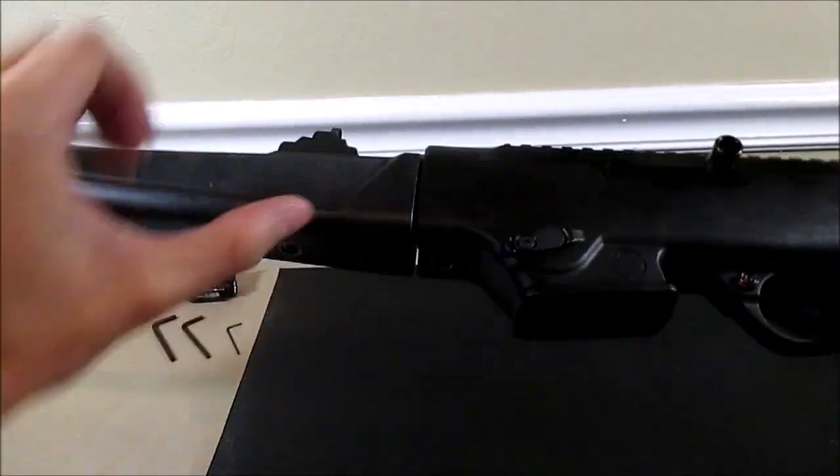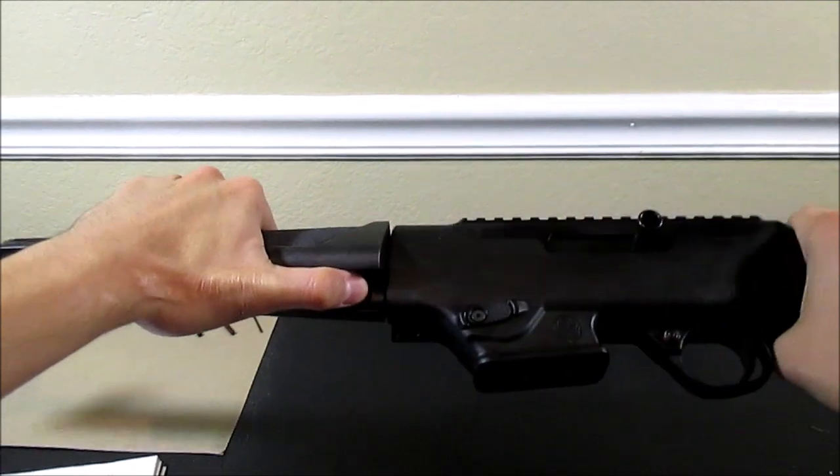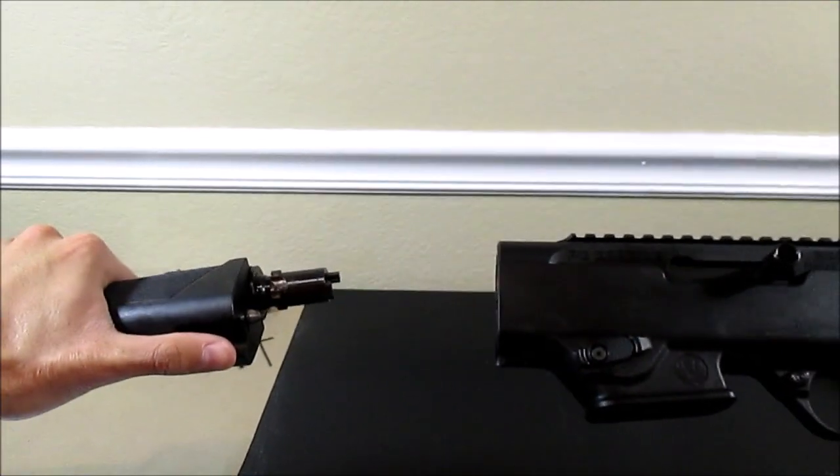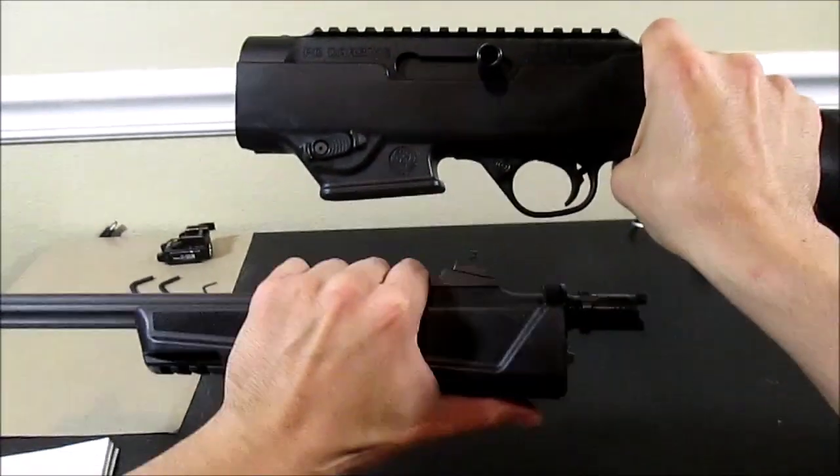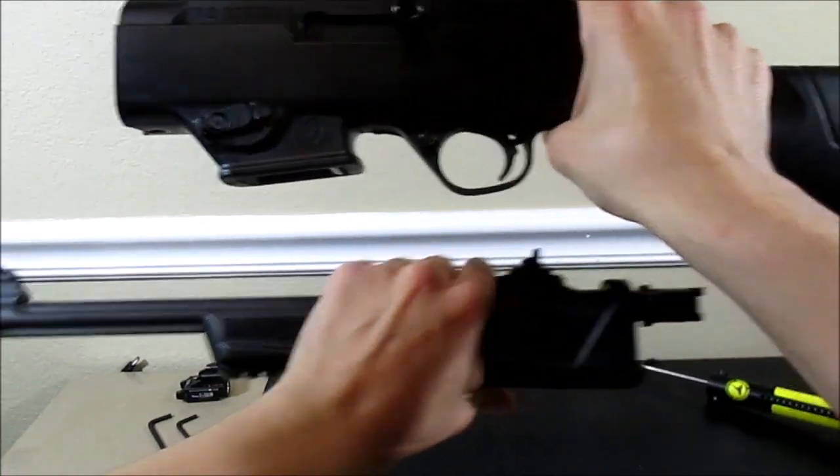And then here you have a takedown lever. And you pull it with your thumb. And then you twist it. And the gun breaks into two pieces. So this is actually what I do. And I take it to the range inside of a backpack like this.